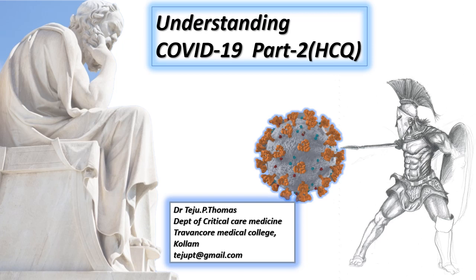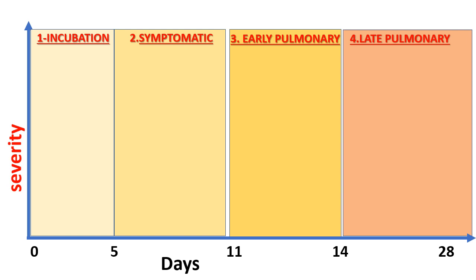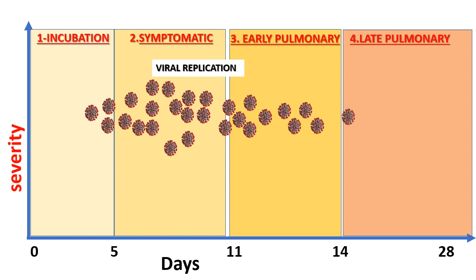Hi, welcome everyone. Today I will be discussing the second part of the lecture series on understanding COVID-19. We will be discussing the drug HCQ. As a reminder of the graph from the last part, there are four stages in COVID-19: the incubation period, the symptomatic phase, and the pulmonary phase divided into early and late. Viral replication is highest in the symptomatic period, around day 5 to day 12, and in the later pulmonary phase, replication is minimal or almost absent.